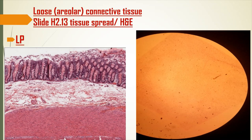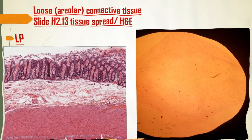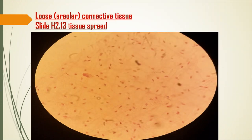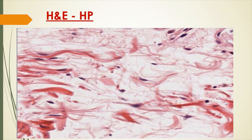Loose areolar connective tissue is also found beneath epithelium in the small intestines. At low power you can see the epithelium, glands such as simple tubular glands, and underneath the basement membrane is where you find the loose areolar connective tissue. This is the low power representation of loose connective tissue.